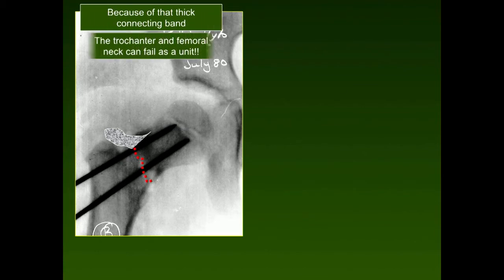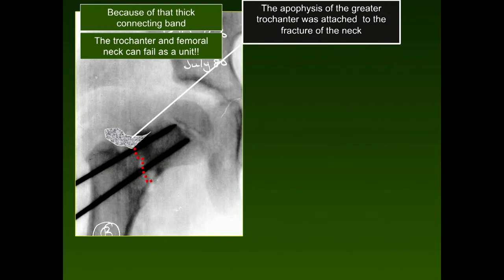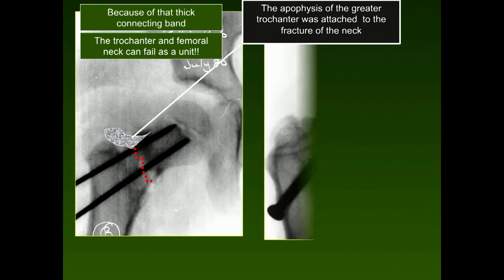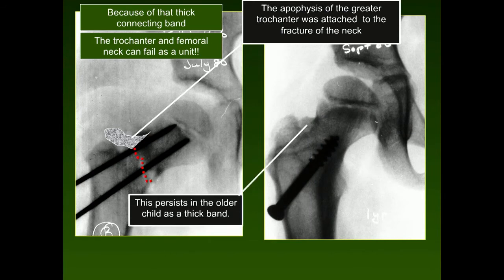Because of this thick connecting band, the trochanter and femoral neck can actually fail as a unit. Even though they're separate ossification centers in the older child, I've seen a transcervical fracture accompanied by an avulsion of the greater trochanteric apophysis. The apophysis of the greater trochanter attaches to the fracture of the neck, and you can see the apophysis is slightly displaced. We usually ignore that clinically, but it's something you need to understand can occur.